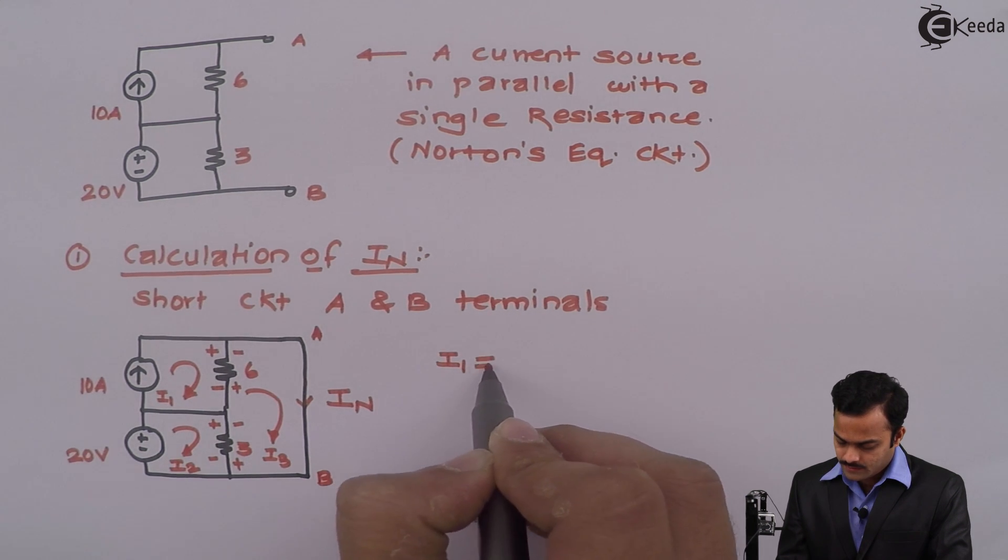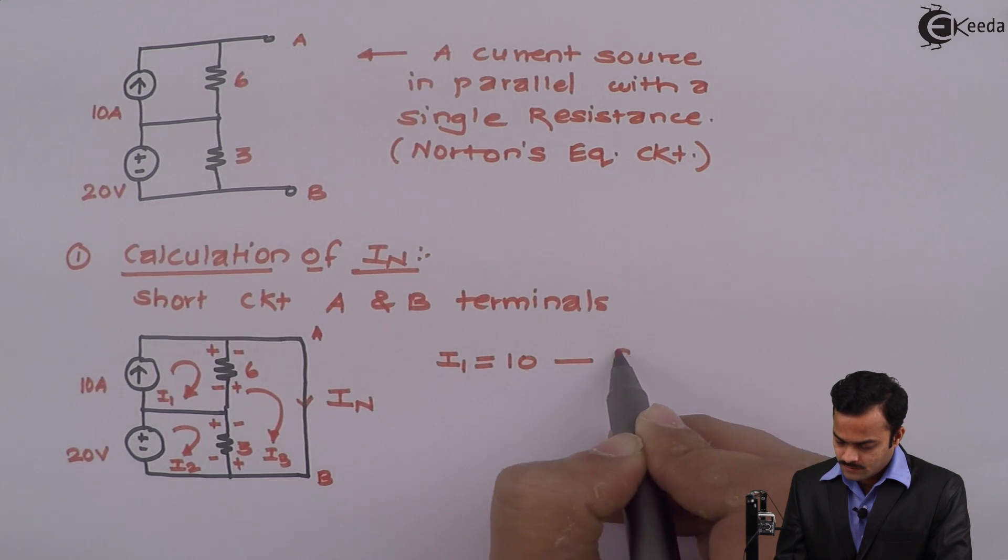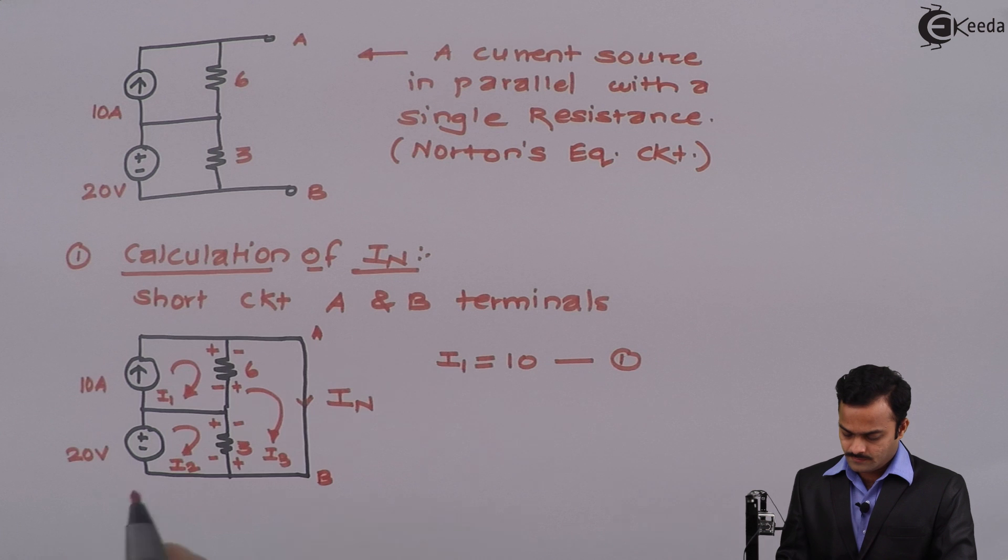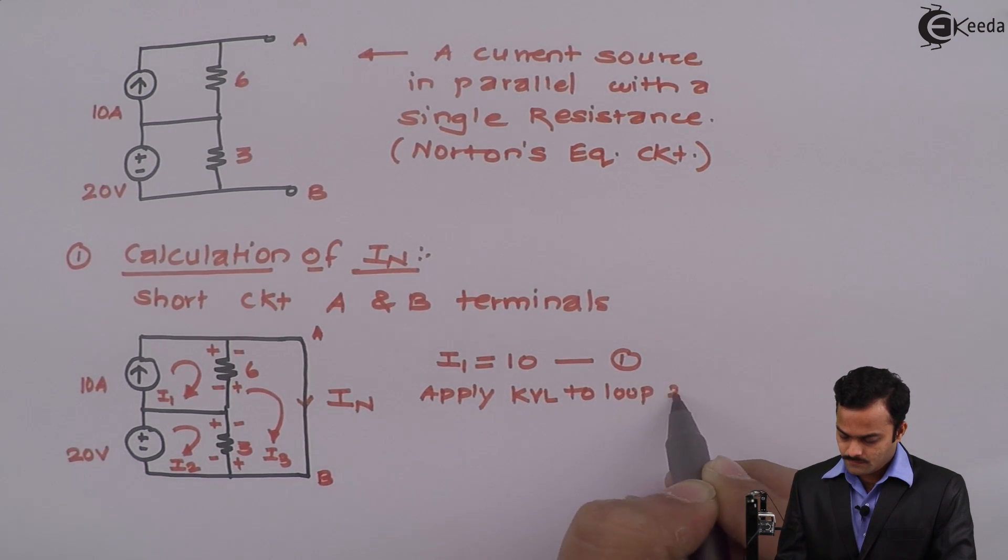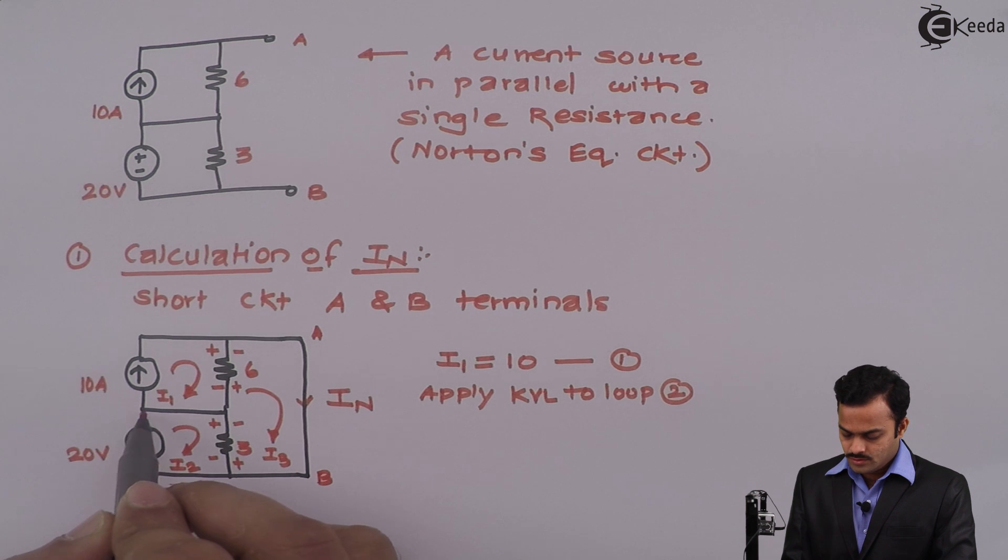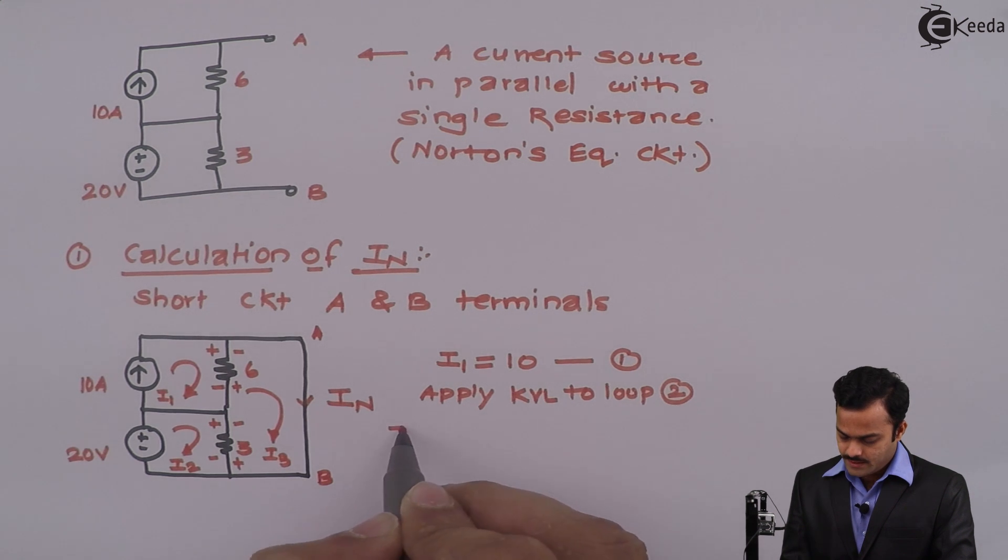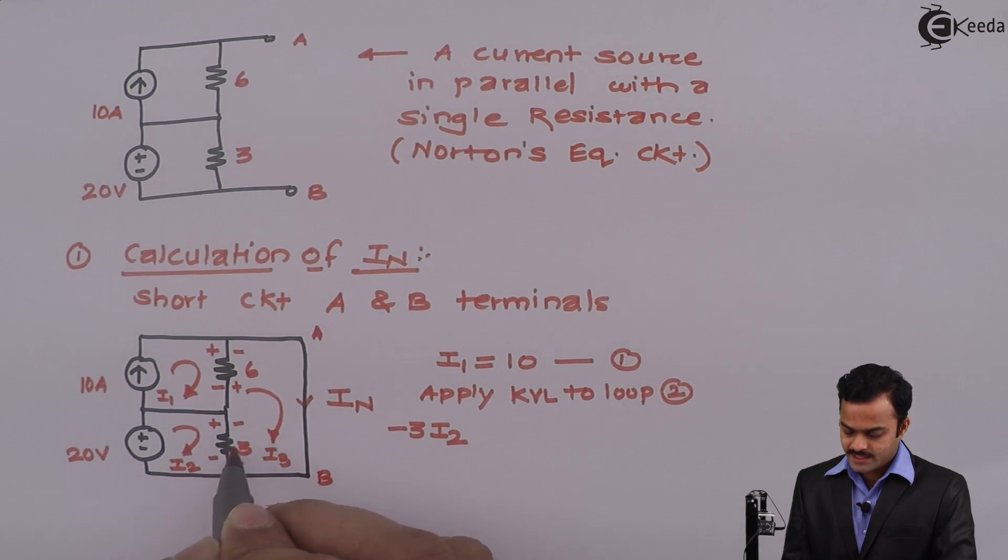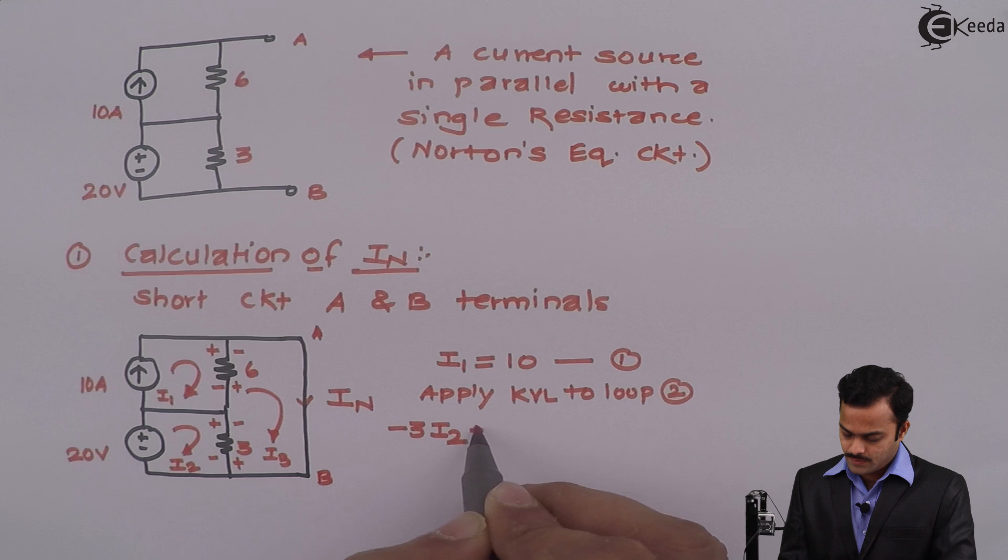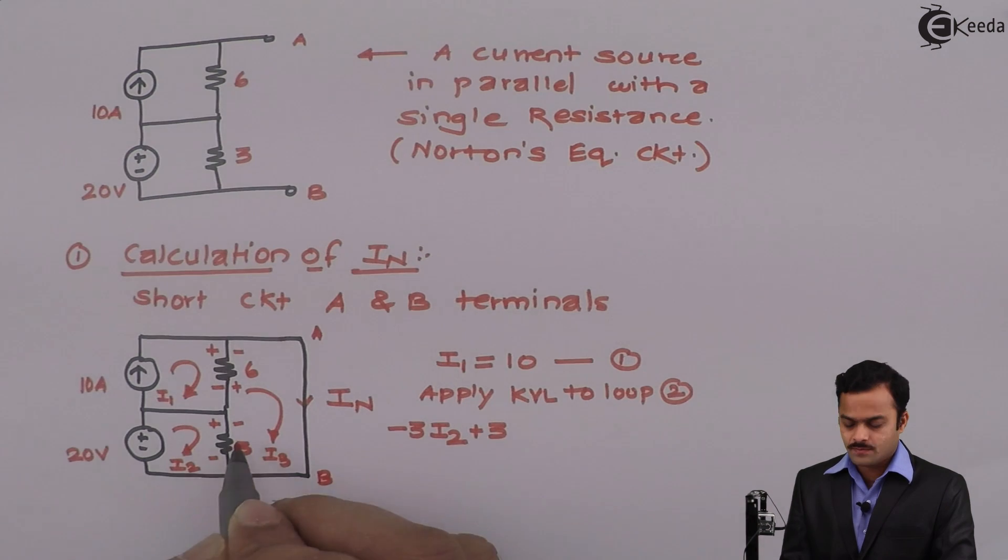Because loop current I1 is fixed by this current source, so I can directly write I1 equal to 10, equation number 1. Let's apply KVL to loop number 2. I will start from this point, so here to here there is no element. Here it is plus minus so it's minus 3 I2. One more drop in this direction is minus plus, that is plus 3 and the current responsible is I3.